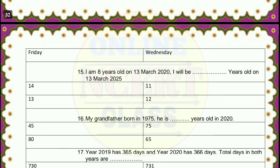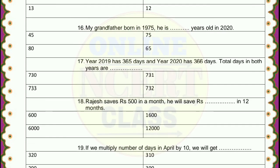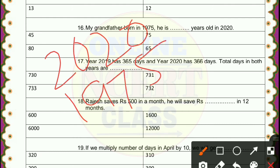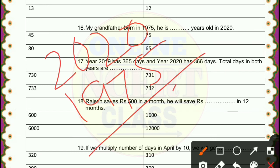Question 16: my grandfather was born in 1975. He is how many years old in 2020? To find out, we need to calculate 2020 minus 1975. Sorry students, the answer is not 25 — let me correct that. 2020 minus 1975 equals 45. So 45 is the correct answer.